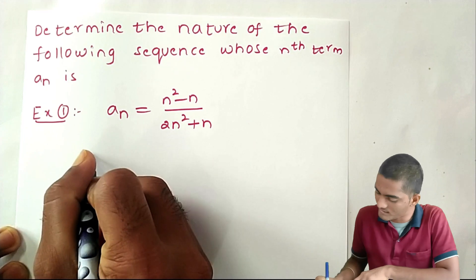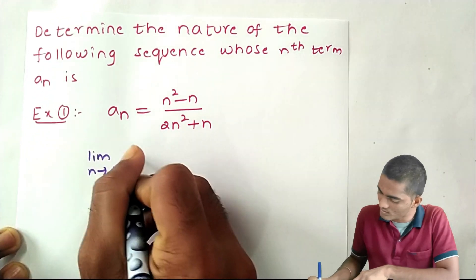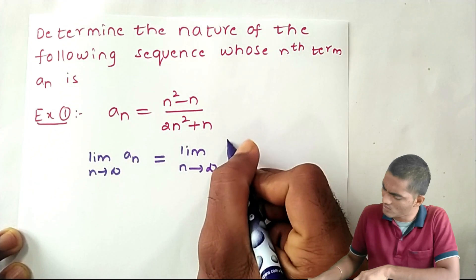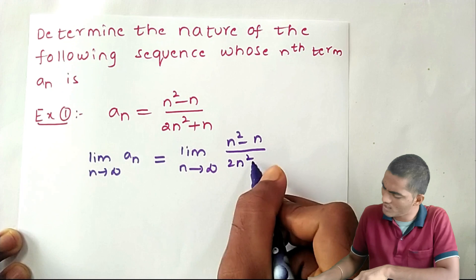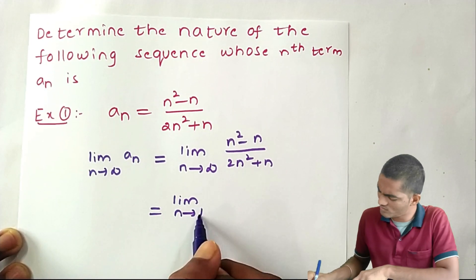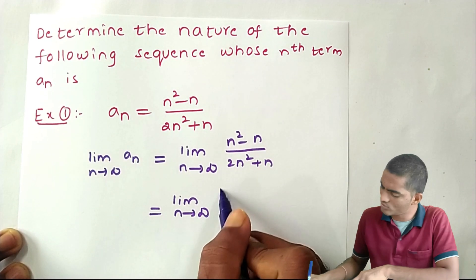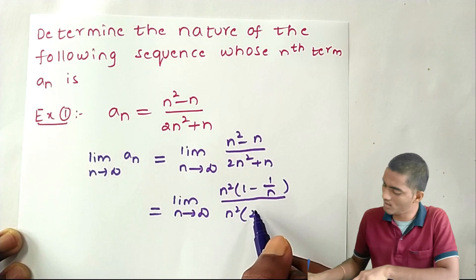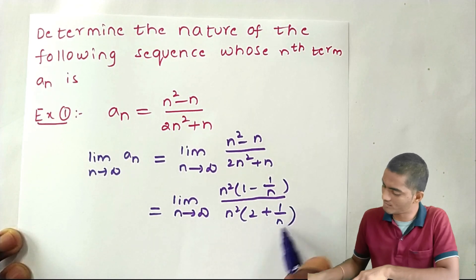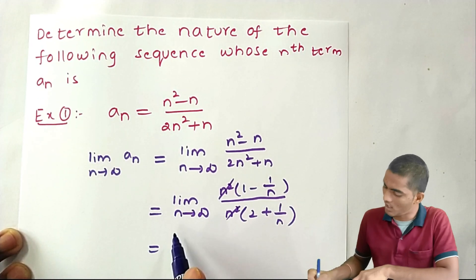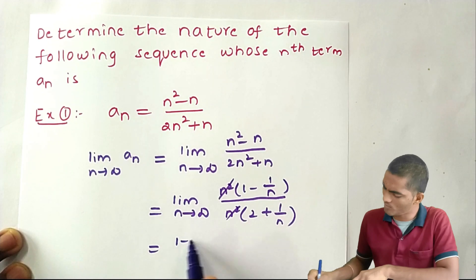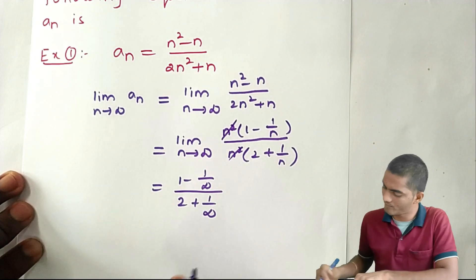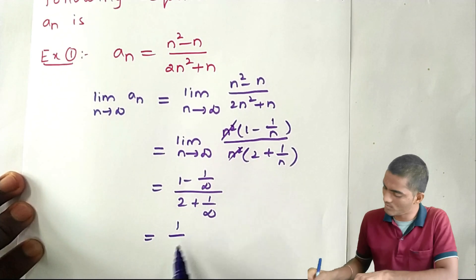Applying limit to the nth term: a_n = limit as n tends to infinity of (n² - n) / (2n² + n). Taking n² common from numerator and denominator: (1 - 1/n) / (2 + 1/n). Cancelling n², and applying the limit: (1 - 1/∞) / (2 + 1/∞). Since 1/∞ = 0, the result is 1/2.